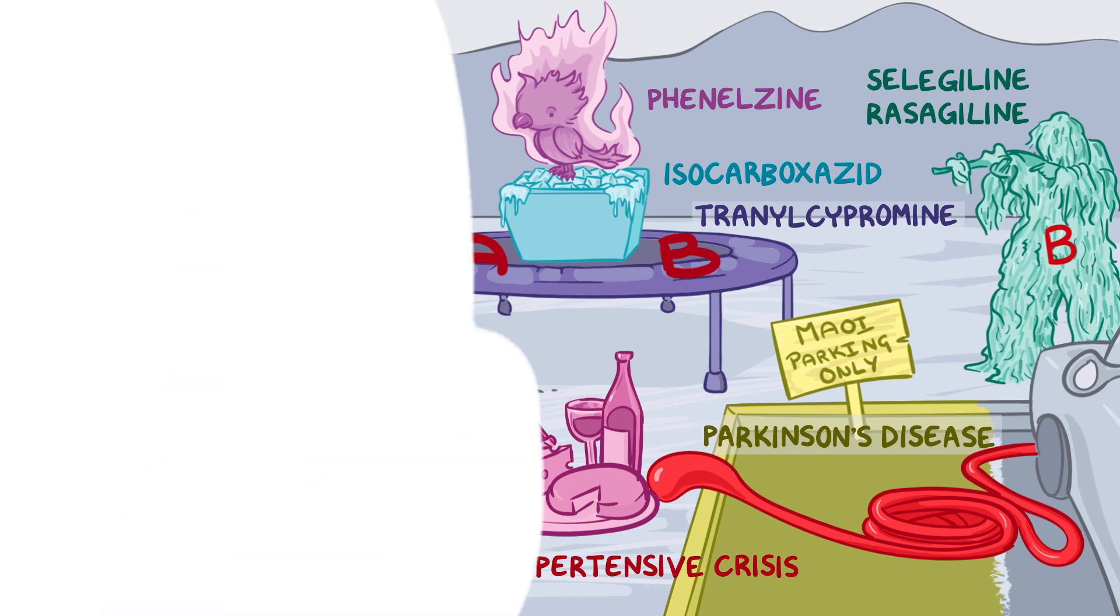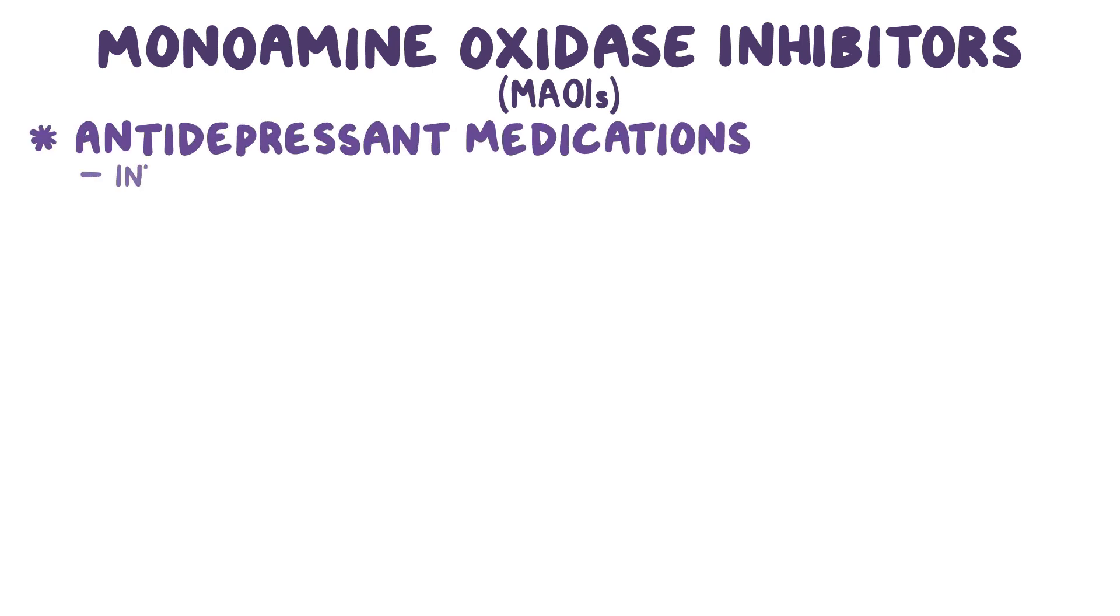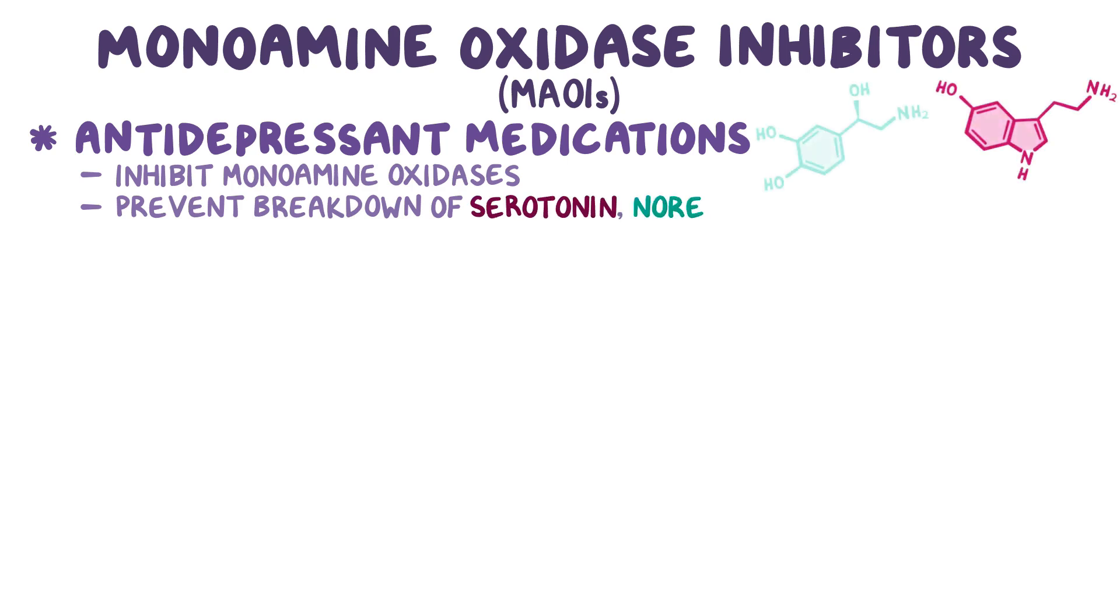Alright, as a quick recap. Monoamine oxidase inhibitors, or MAOIs, are antidepressant medications that inhibit monoamine oxidases and prevent the breakdown of serotonin, norepinephrine, and dopamine, so they can be released again into the synapse.